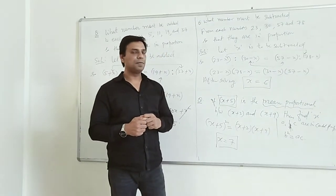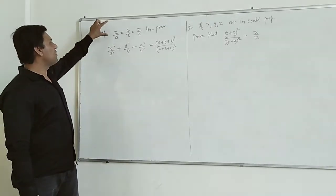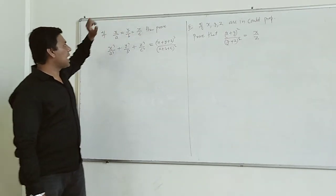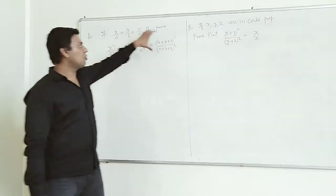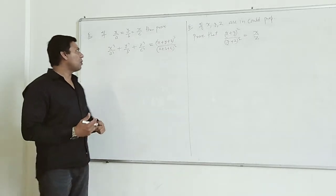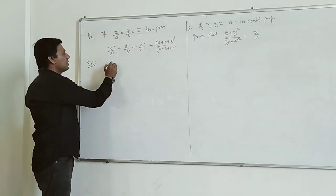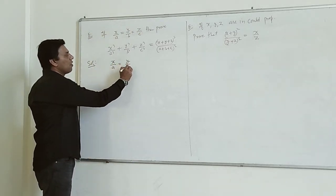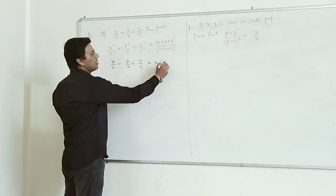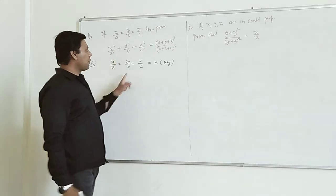Now another question: it is given that X upon A, Y upon B, Z upon C are all equal. Then prove that the left hand side equals the right hand side. Suppose these three ratios are each equal to K. So X upon A equals K, Y upon B equals K, Z upon C equals K. Therefore X equals AK, Y equals BK, and Z equals CK.